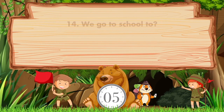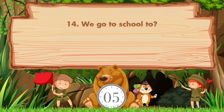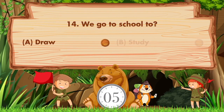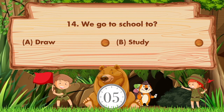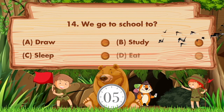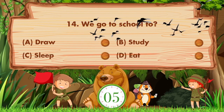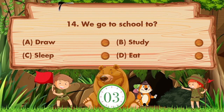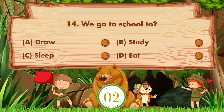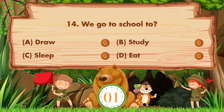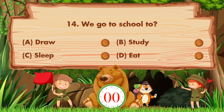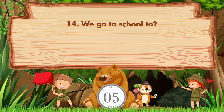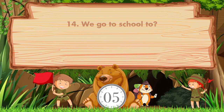We go to school to — option A is draw, B study, C sleep, D eat. Answer is option B: study.